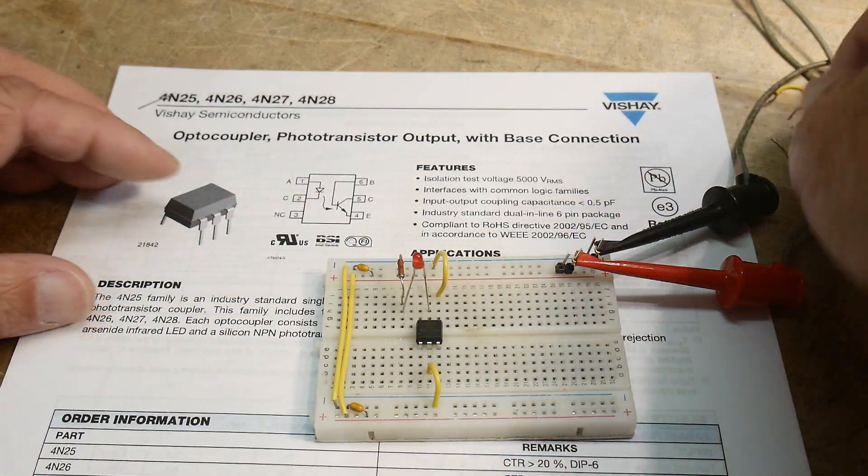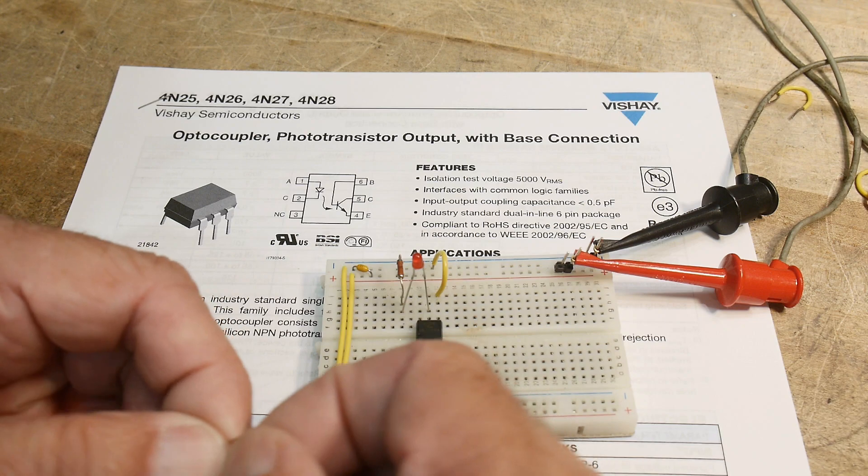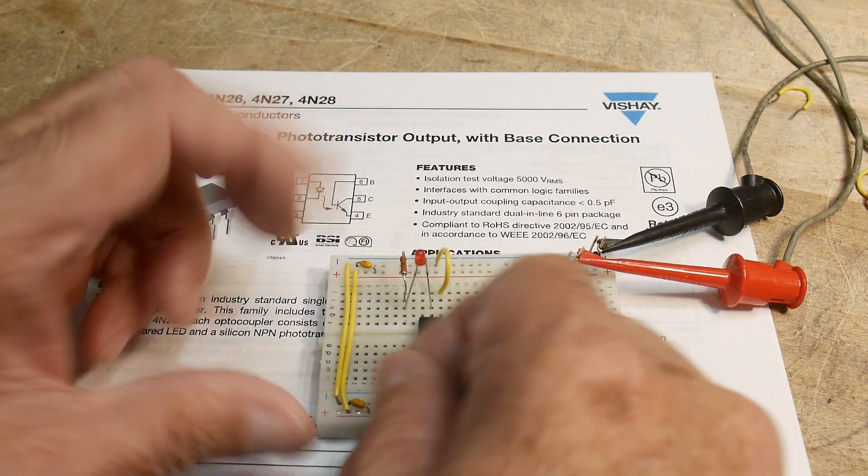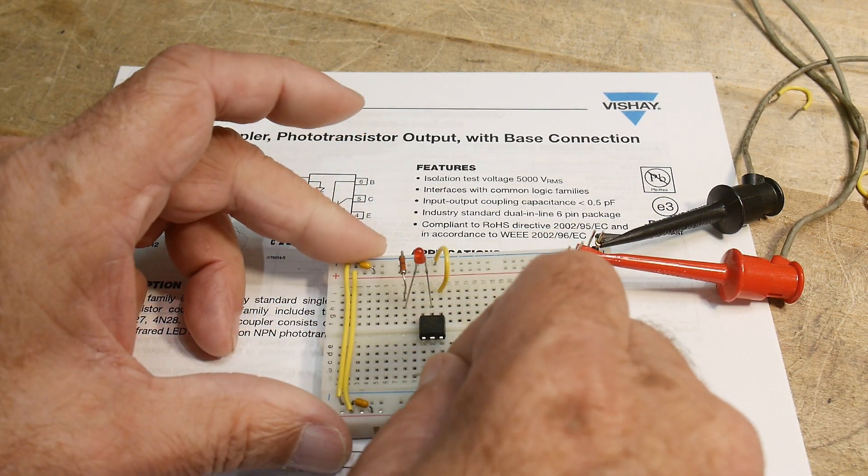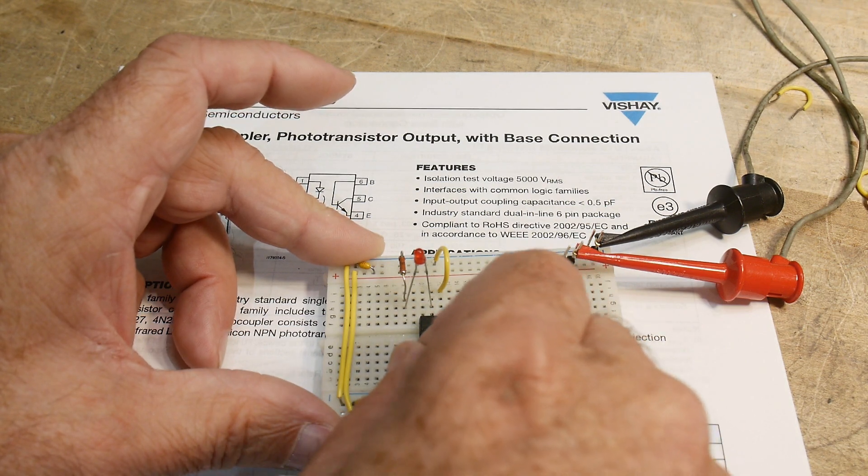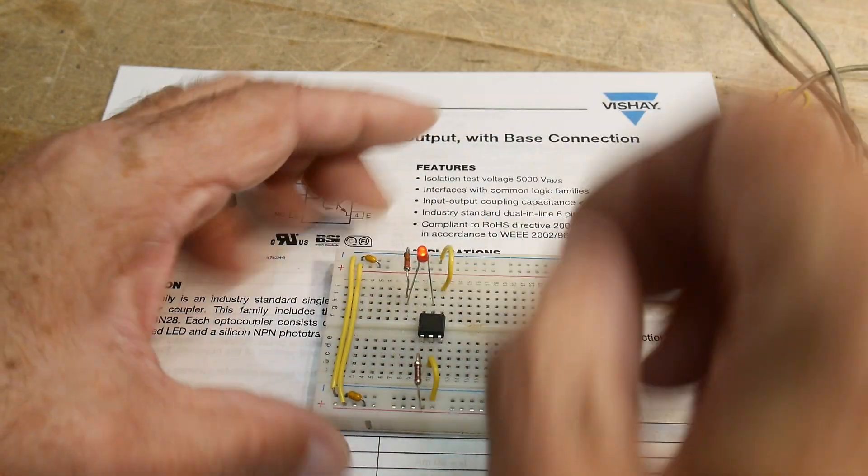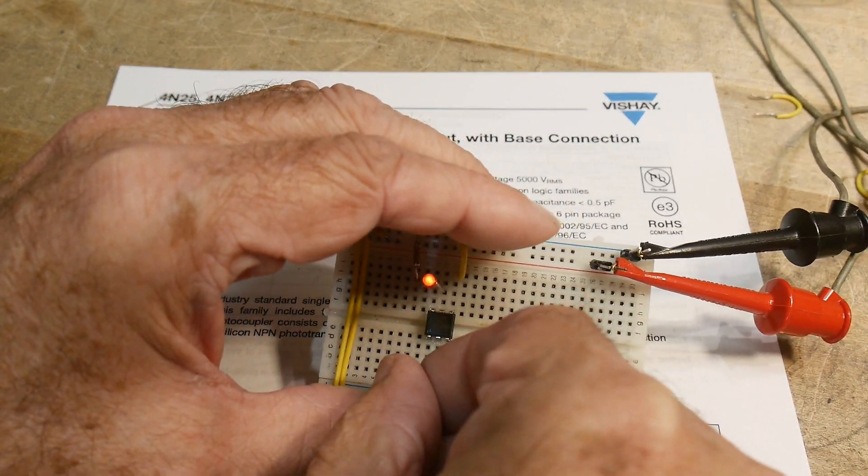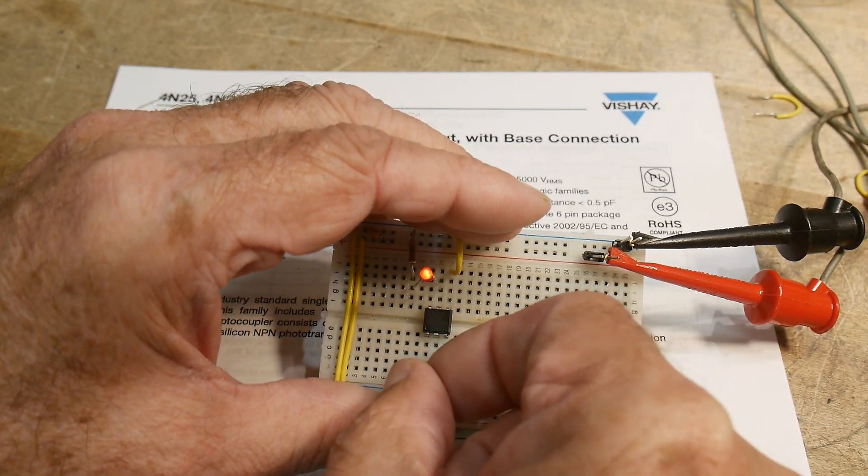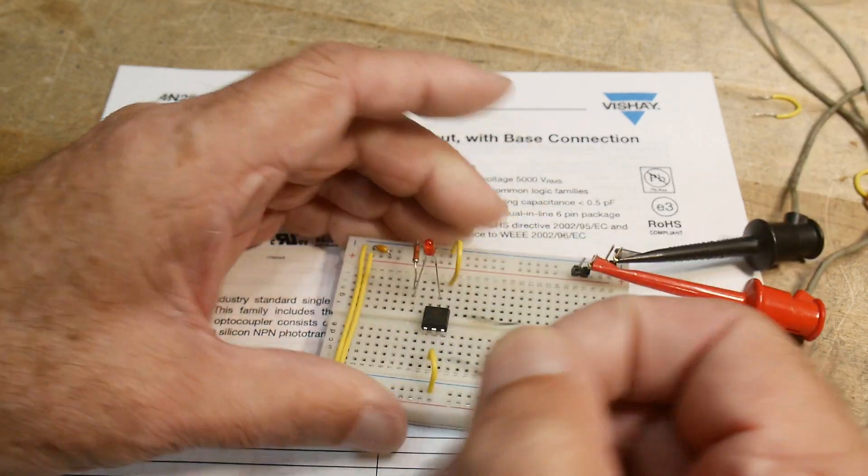So let's do that. Let's put a 1K resistor on the LED. So we'll turn on the LED, and our little light comes on. Yay, a light comes on. And then when we take out the biasing of the LED, it turns off. So that's an optocoupler.